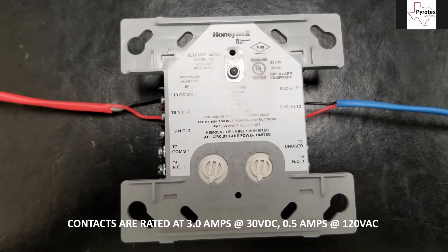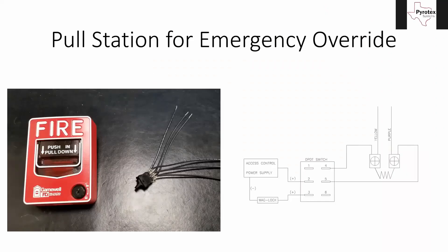The last point is using pull stations for the emergency override switch. Here's a Gamewell pull station — this is actually a conventional pull station, not the addressable one. Beside it, there's a second switch that has six wires coming off the back: three going up one direction and three bent down going another, forming two different sides to this switch, each with a separate circuit.